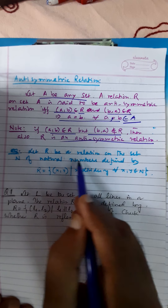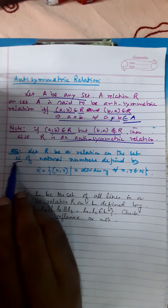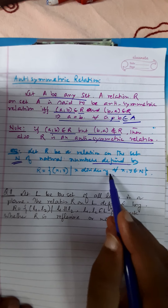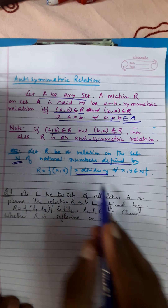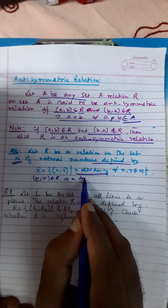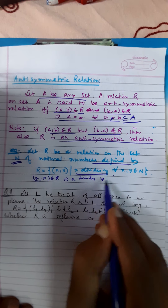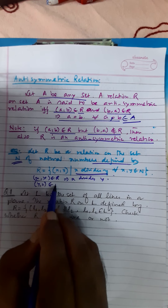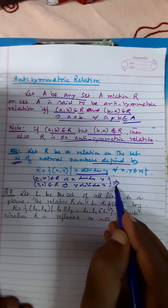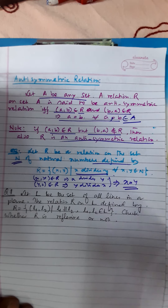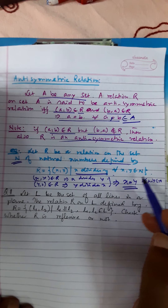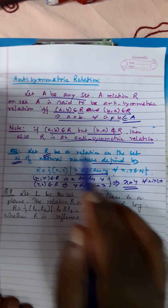As an example, let R be a relation on the set of natural numbers defined by R = {(x, y) such that x divides y}. If x comma y belongs to R, it implies x divides y. Again, if y comma x belongs to R, it implies y divides x. Both hold only when x is equal to y, for all x comma y belonging to N. Therefore, R is an anti-symmetric relation.